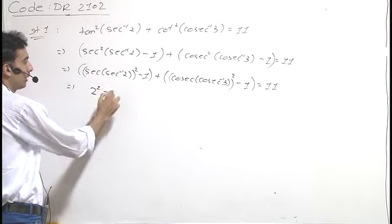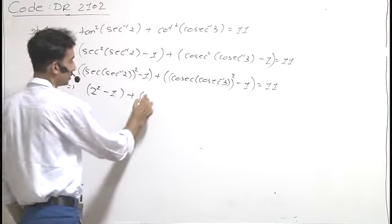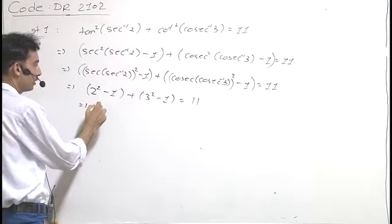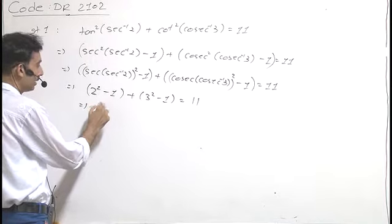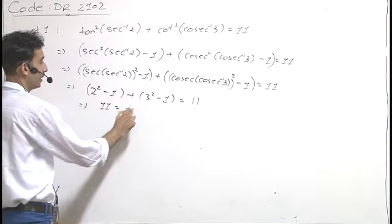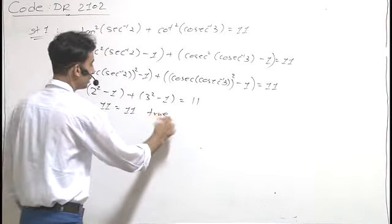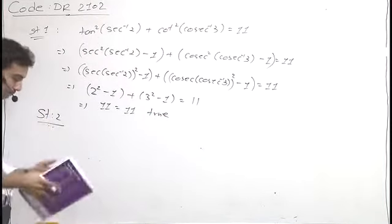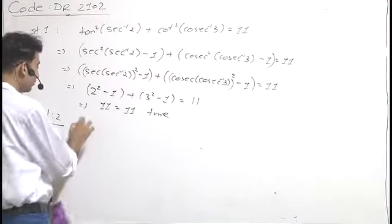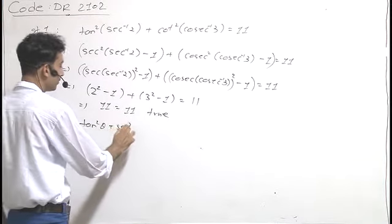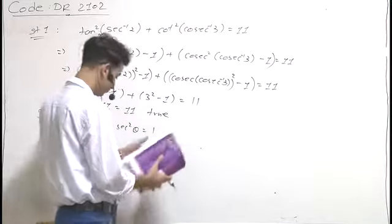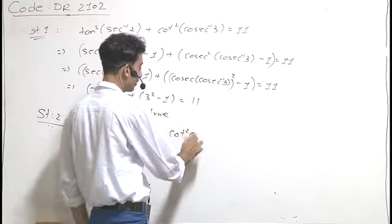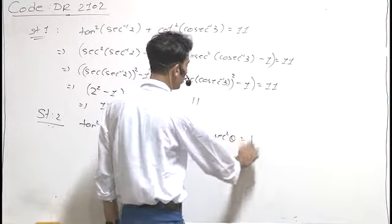We know that sec(sec⁻¹2) equals 2, so this gives us 2² minus 1 plus 3² minus 1 equal to 11, which gives us 11 equal to 11. So Statement 1 is definitely true. Now for Statement 2: tan²θ plus sec²θ equal to 1, and cosec²θ minus cot²θ plus cosec²θ equal to 1.